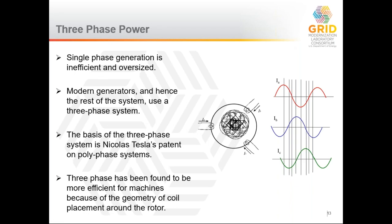Making just a single phase of power is not very efficient from the geometry of machines, so we use a three-phase system. Pretty much every major generating station in North America uses three-phase generators. Smaller generators used for camping or emergencies may be single-phase because that matches the house connection. For large central power plants dealing with tens or hundreds of megawatts, a three-phase system is used because the geometry makes it much more efficient. This is based on Nikola Tesla's patent of polyphase systems.